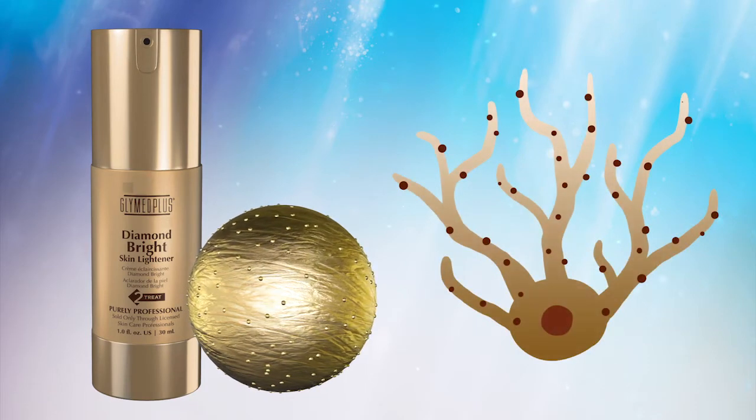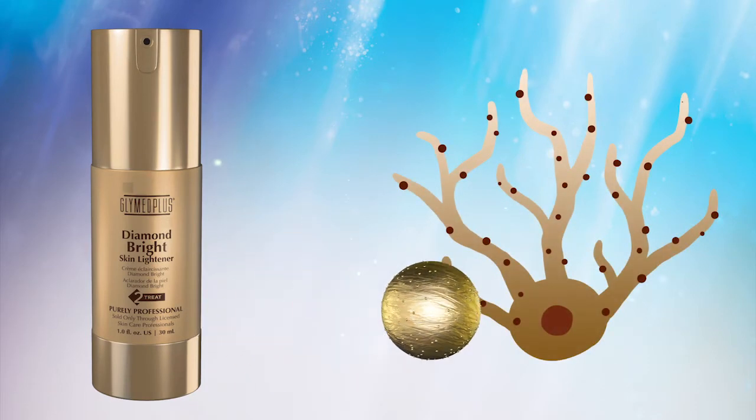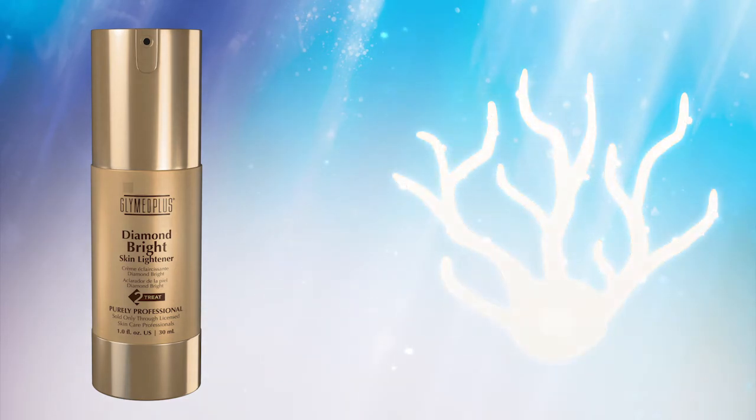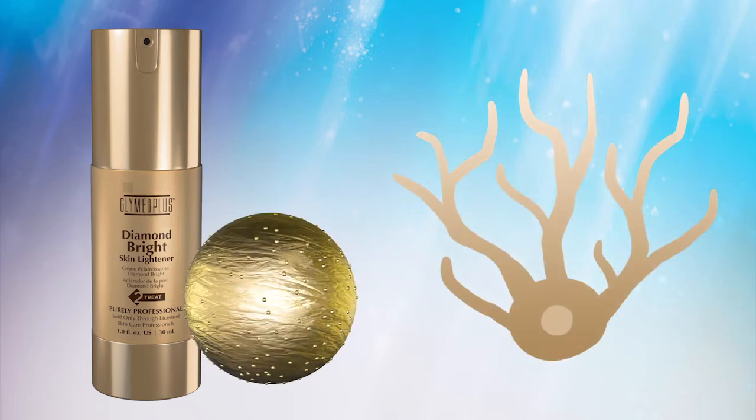Diamond Bright Skin Lightener's drone only targets damaged melanocytes and releases its ingredient to reduce the overproduction of melanin, while leaving all other skin cells alone.